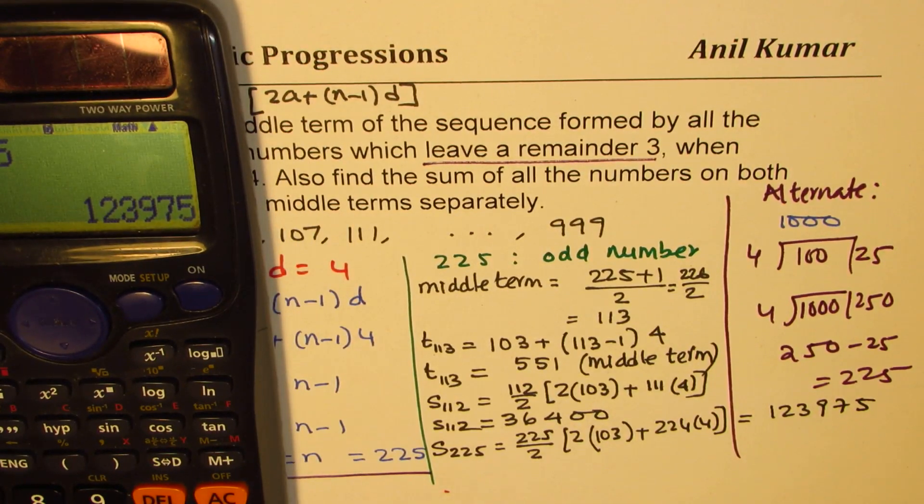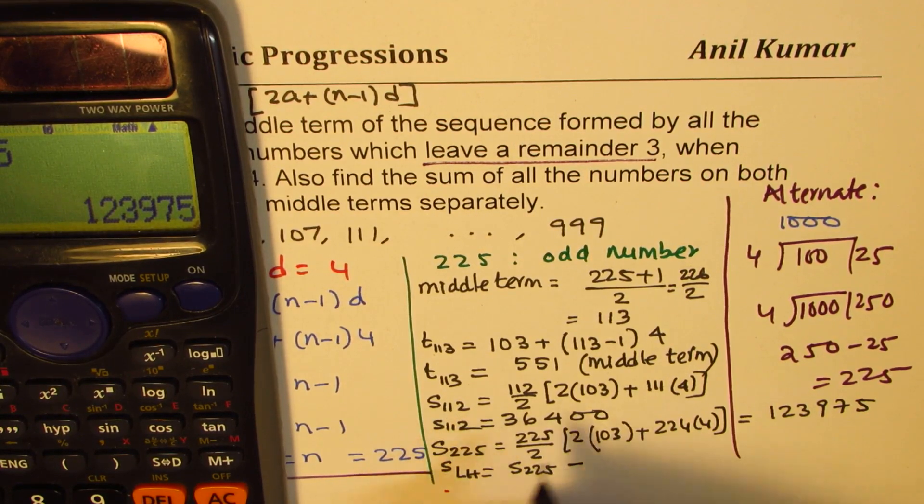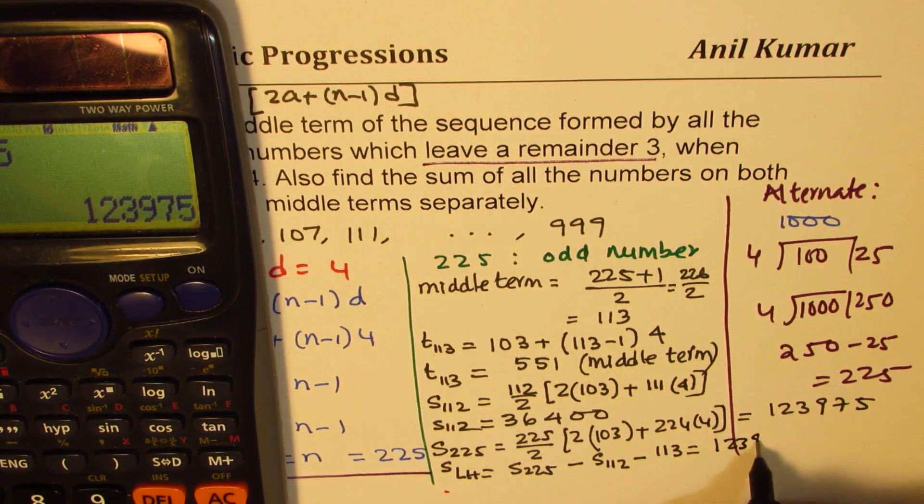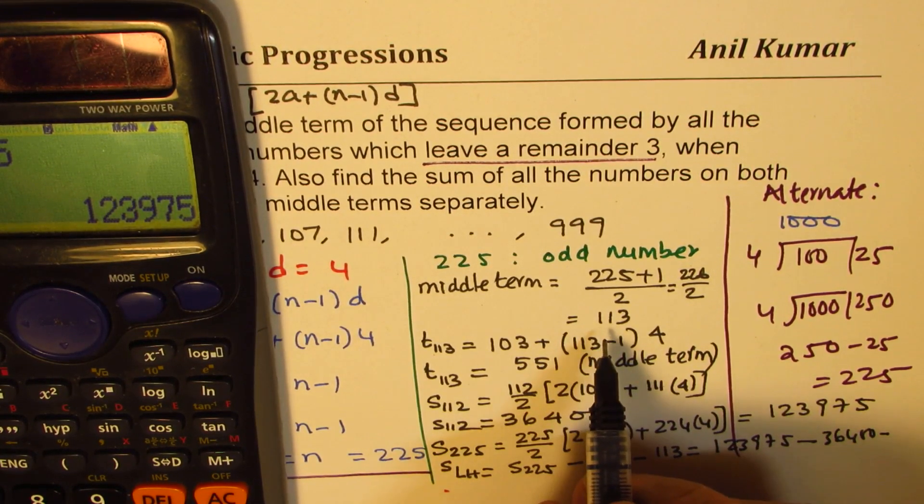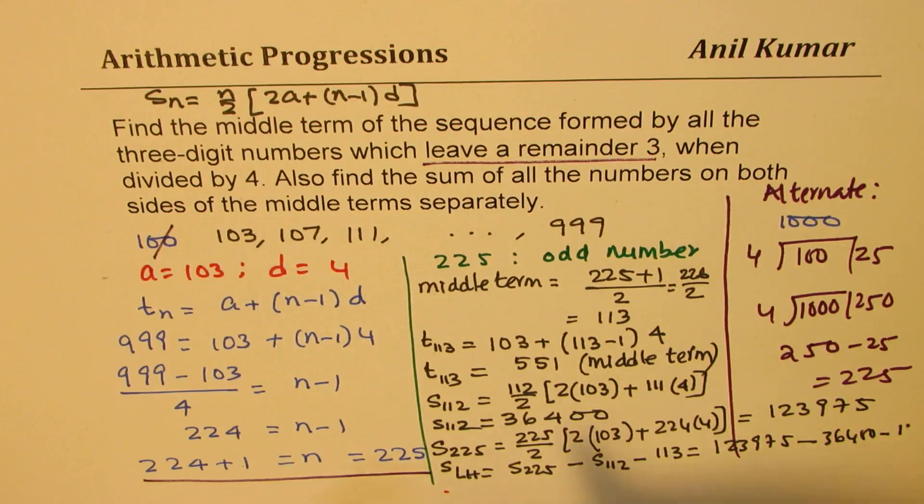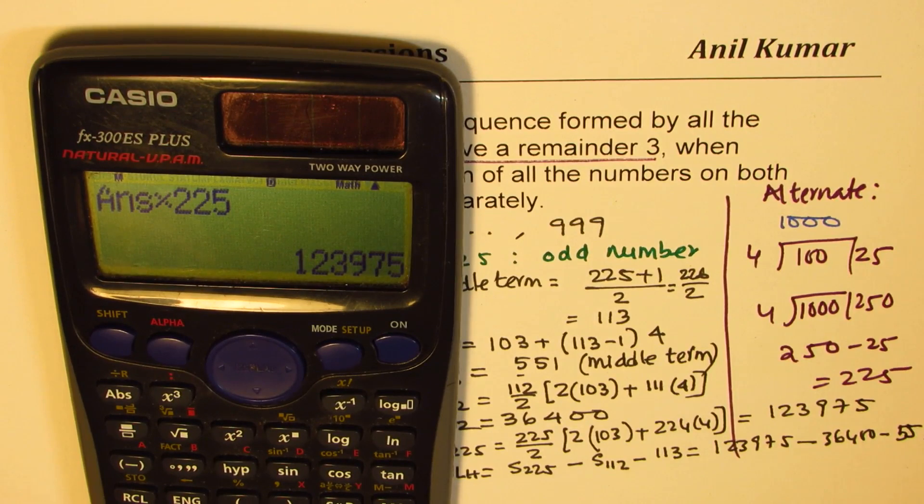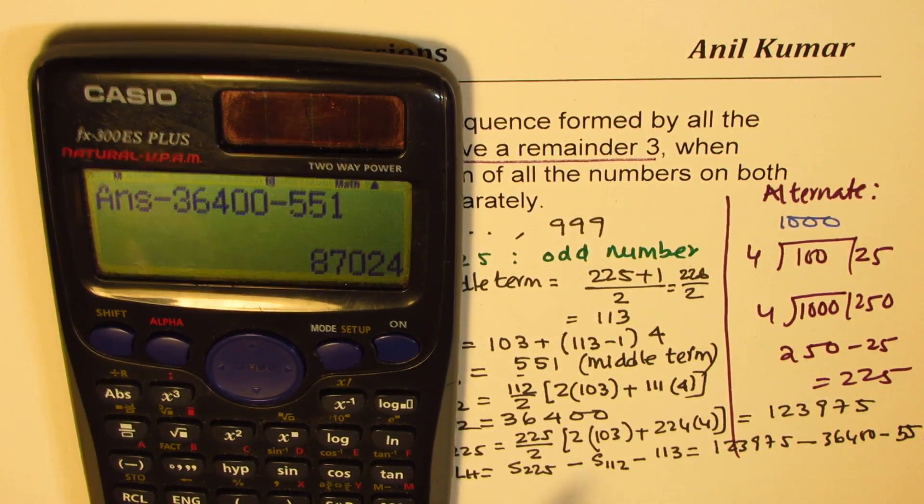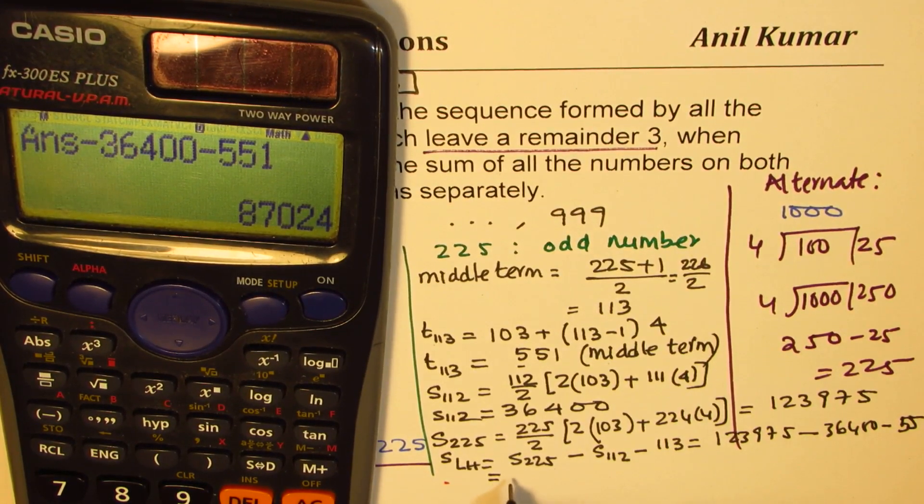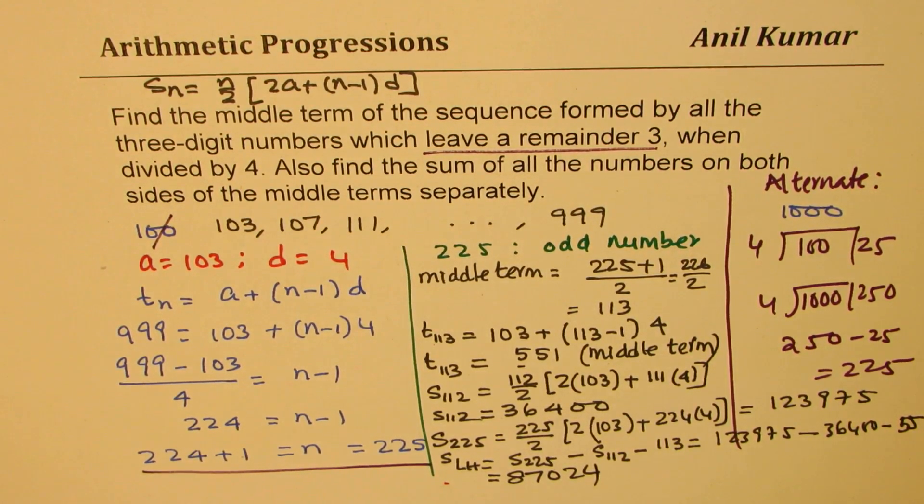Now, what is the sum of the later half? So the sum of the later half should be sum of 225 terms minus sum of the first half which is 112 terms minus the middle term which is 113. So that means 123,975 minus what we found earlier 36,400 minus middle term which is equal to middle term was 551. Here it is 551. So we already have this total sum. So from this we'll take away 36,400 minus 551 to get the later half which is equal to 87,024. So that is how we could actually get the answer for the later halves. The values which we have used is the middle term which is 551, the sum of the first half, the total which was this much and the formula.